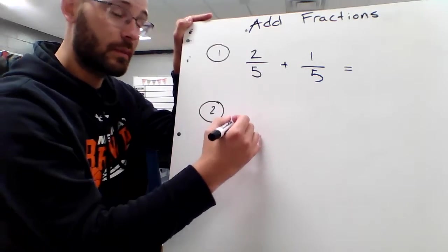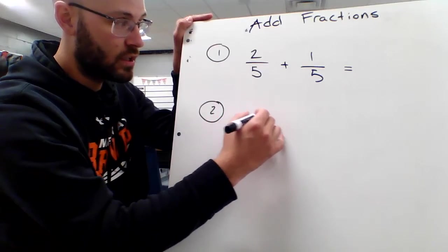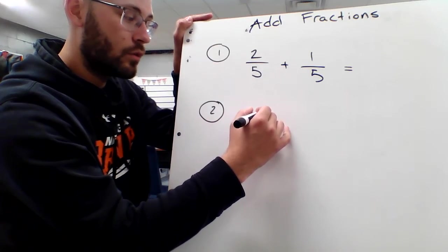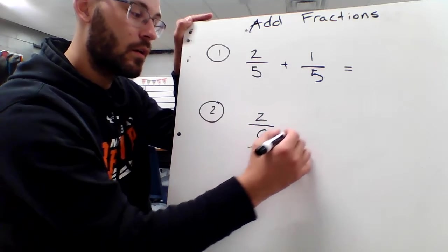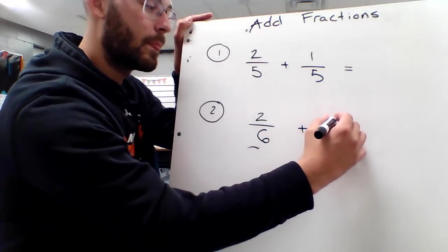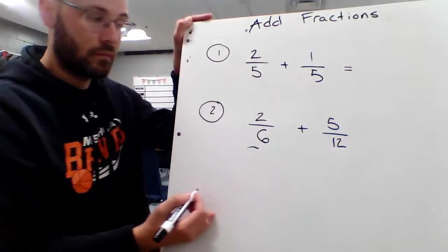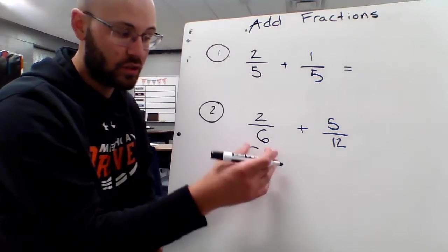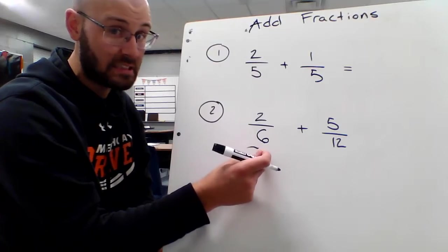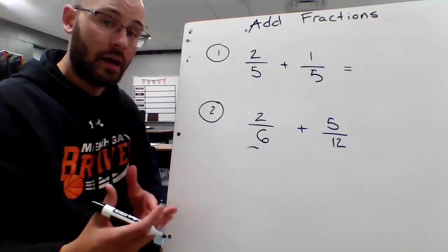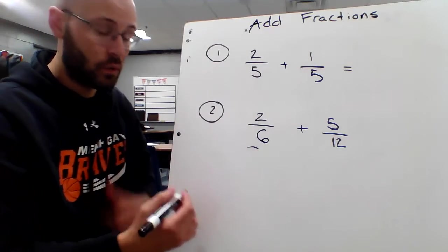I want you to try something that does one side can be changed. For example, I'll do 2 sixths plus 5 twelfths. Notice how they're not common. You're going to have to change one side to become a common denominator to match the other side by finding equivalent fractions.